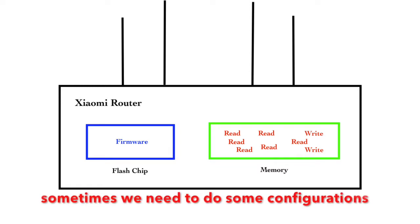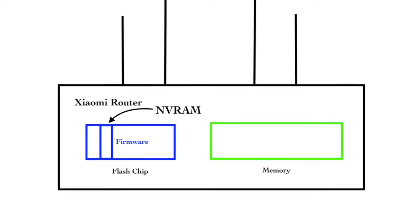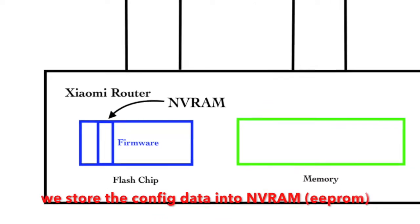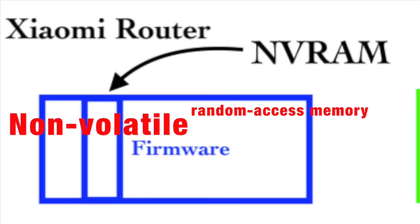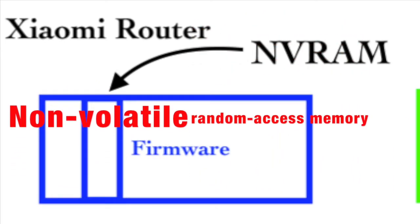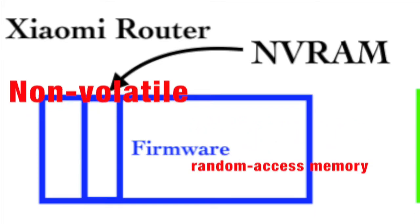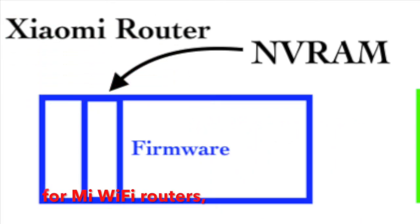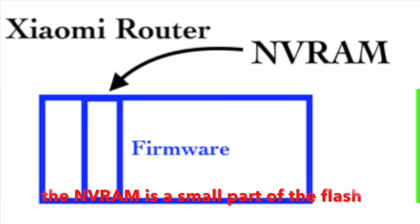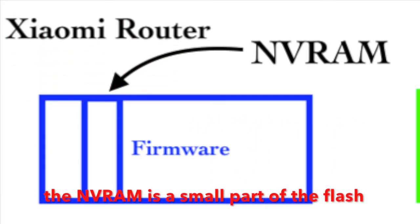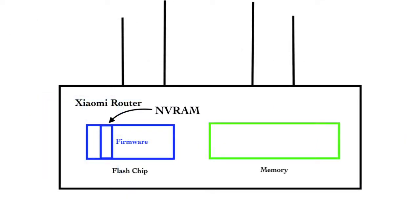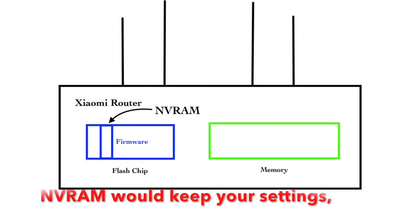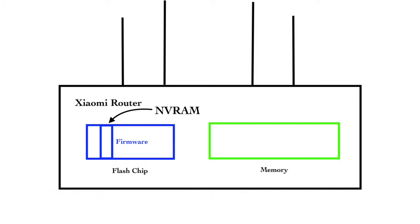Sometimes we need to do some configurations of the Wi-Fi router. We store the configuration data into NVRAM. For Wi-Fi routers, the NVRAM is a small part of the flash storage. This is quite different from Cisco devices. But all in all, NVRAM would keep your settings, no matter if power is on or off.